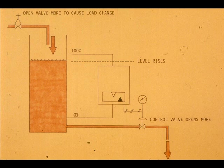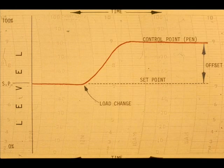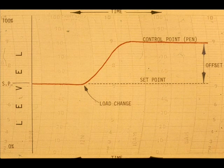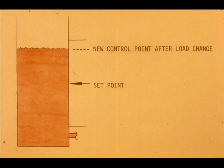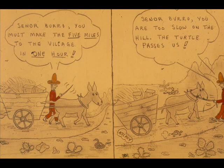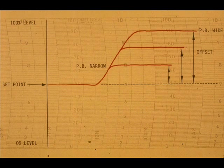If we create a load change by increasing the water supply rate, the level will rise and the control valve will open further. The control record will look like this. For the control valve to assume a different stem position, the control point must move somewhere else in the proportional band, which means the process variable — the level in our example — must move to some position other than the set point. Proportional action only cannot compensate for a load change. The wider the proportional band, the greater the offset will be.